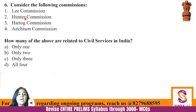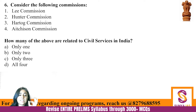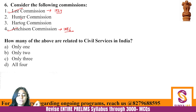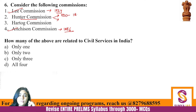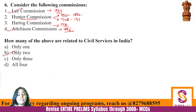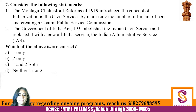Question 6: Consider the following commissions - Lee Commission, Hunter Commission, Hartog Commission, and Aitchison Commission. How many are related to civil services? Lee Commission (1924) and Aitchison Commission (1886) are related to civil services. Hunter Commission had two versions: one for education in 1882-83, and one for the Jallianwala Bagh massacre in 1919. Hartog Commission was for education in 1929. So only two commissions here are related to civil services.